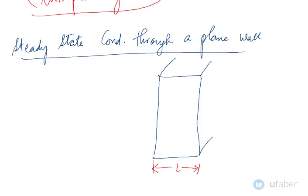The thickness of this wall is L. Temperature on this side is T1, temperature on this side is T2. As we know from the basics of heat transfer, heat always flows from higher temperature to lower temperature, so this is the direction of flow of heat.